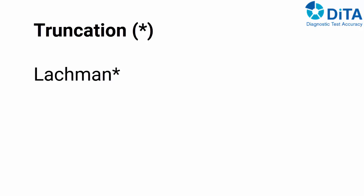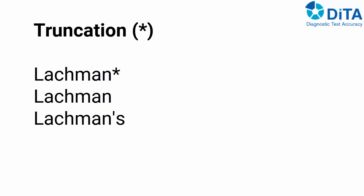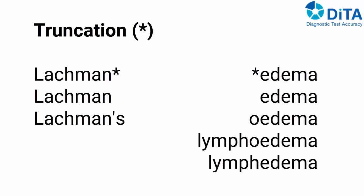You might have noticed that we used an asterisk at the end of some words. The asterisk is the truncation symbol in DITA. Putting an asterisk at the end of a string of text will return all articles containing words that start with that string of text. So 'Lachman*' will return articles that contain both 'Lachman' and 'Lachmans'. This is an example of end truncation. You can also use leading truncation to search for words that end with the same string of text. For example, '*edema' will return articles containing the words edema, oedema, lymphedema, and lymphoedema.